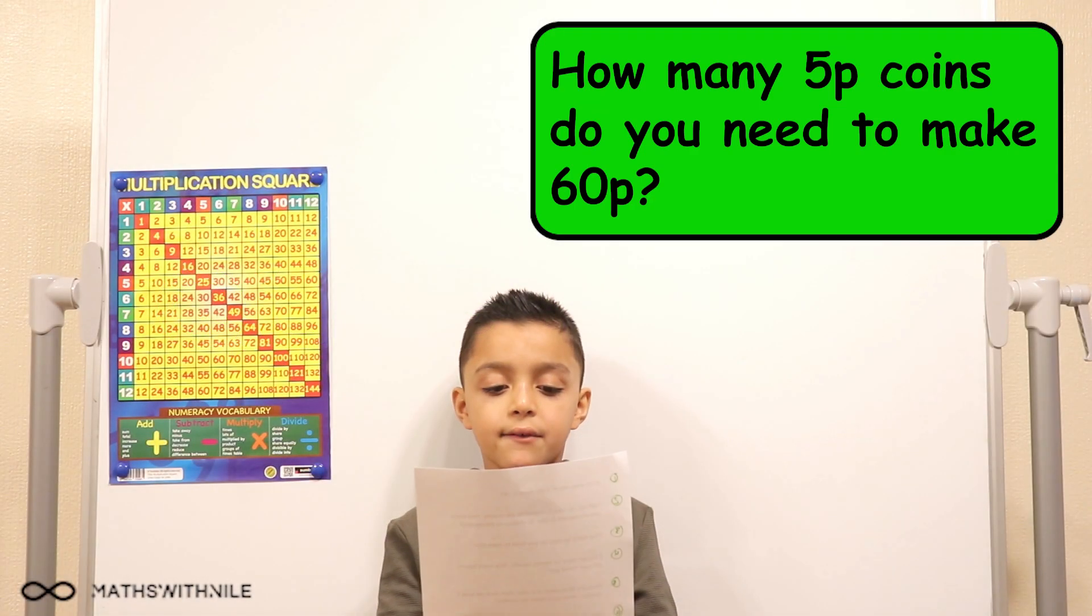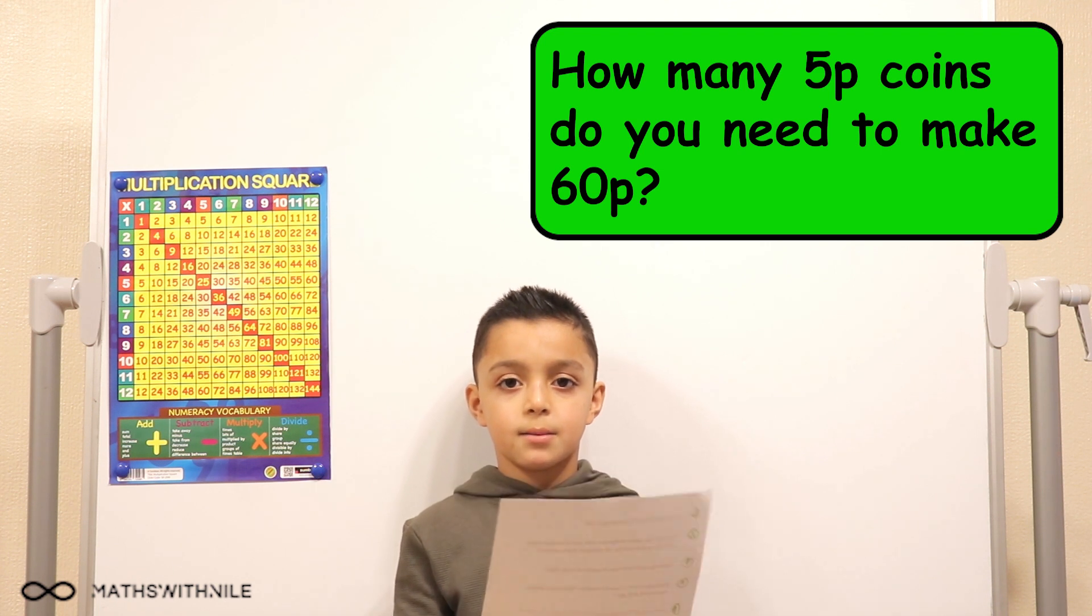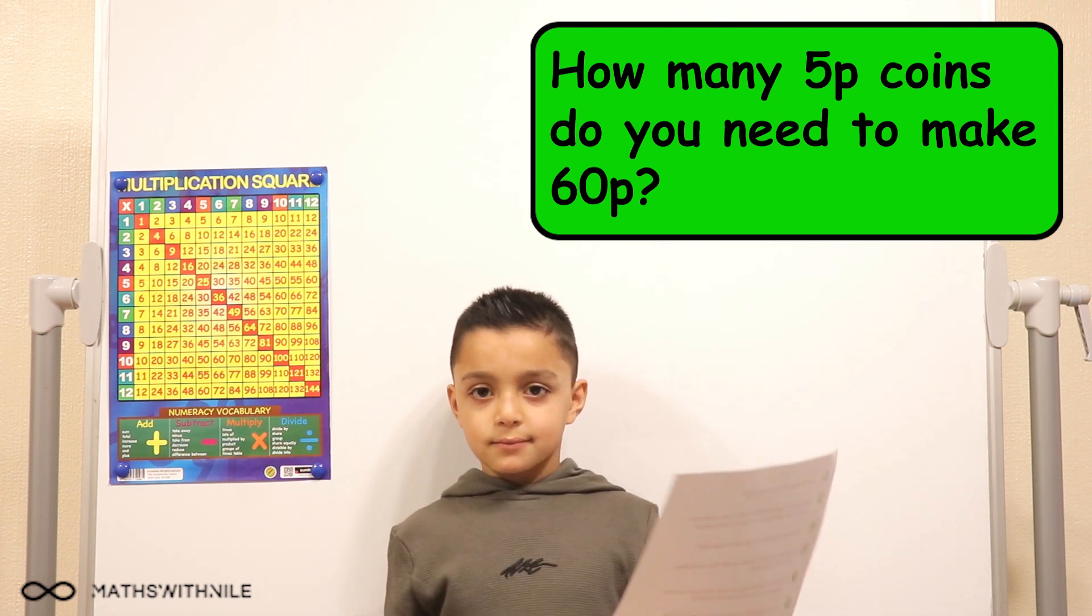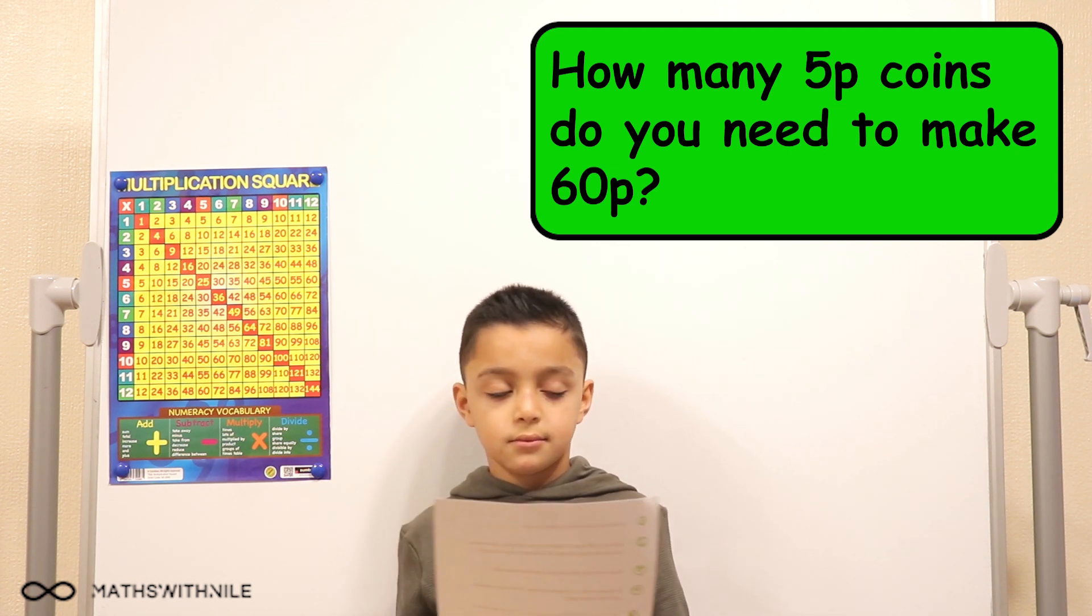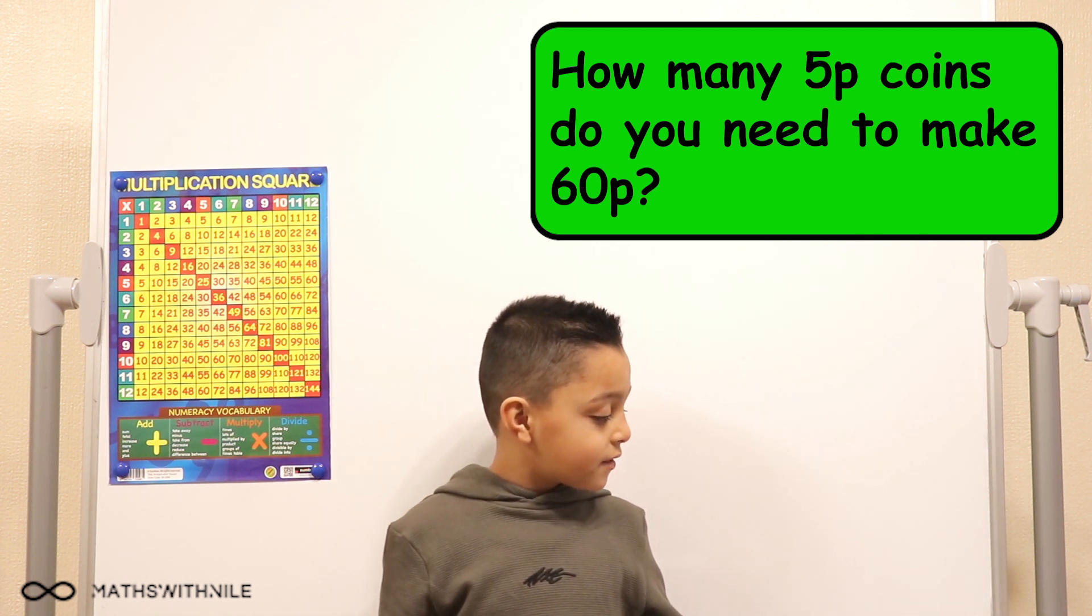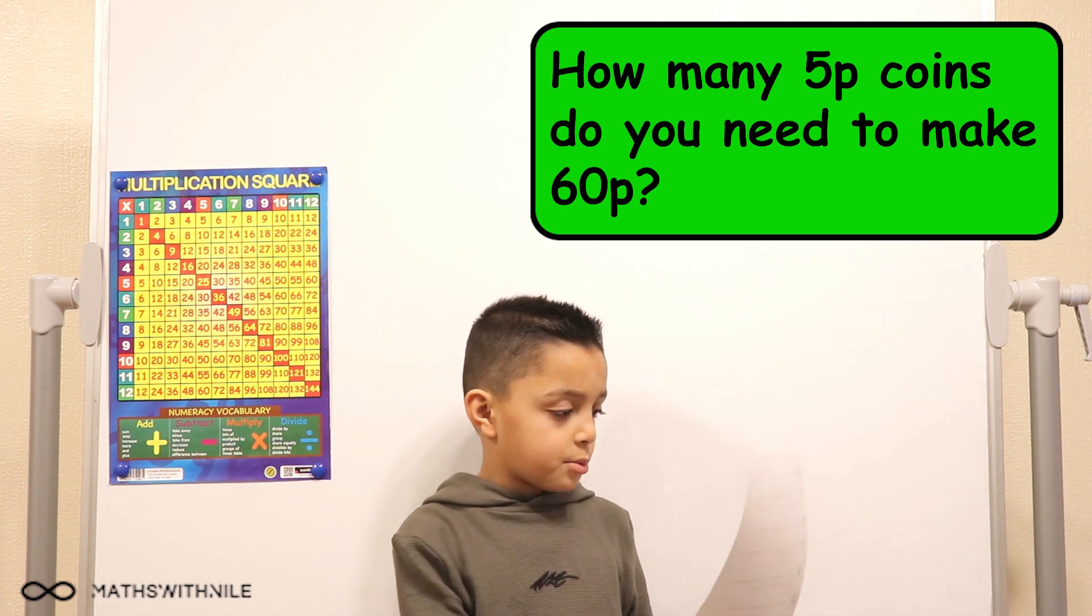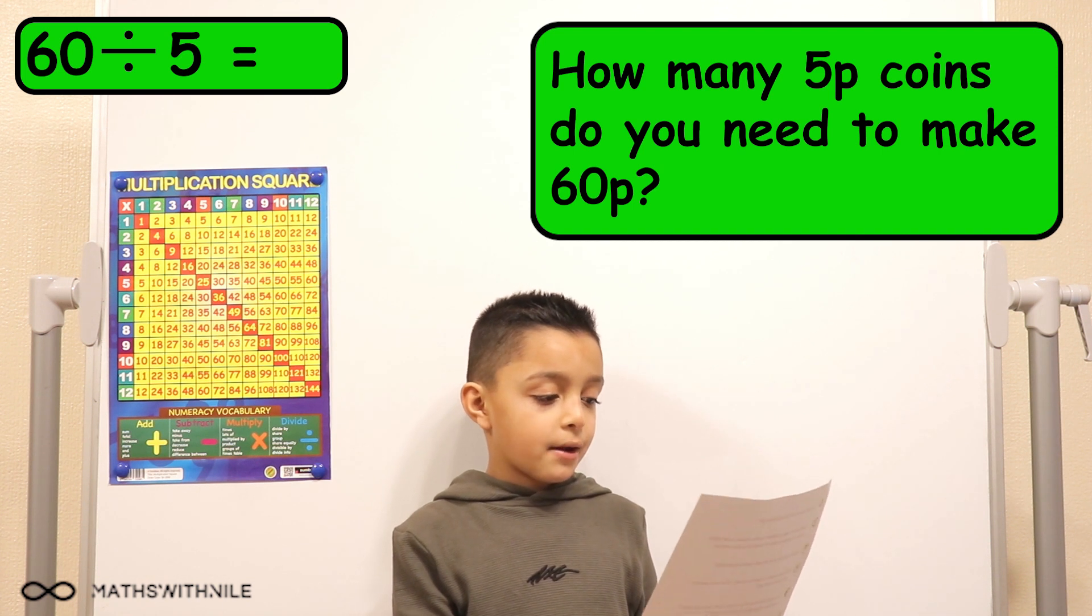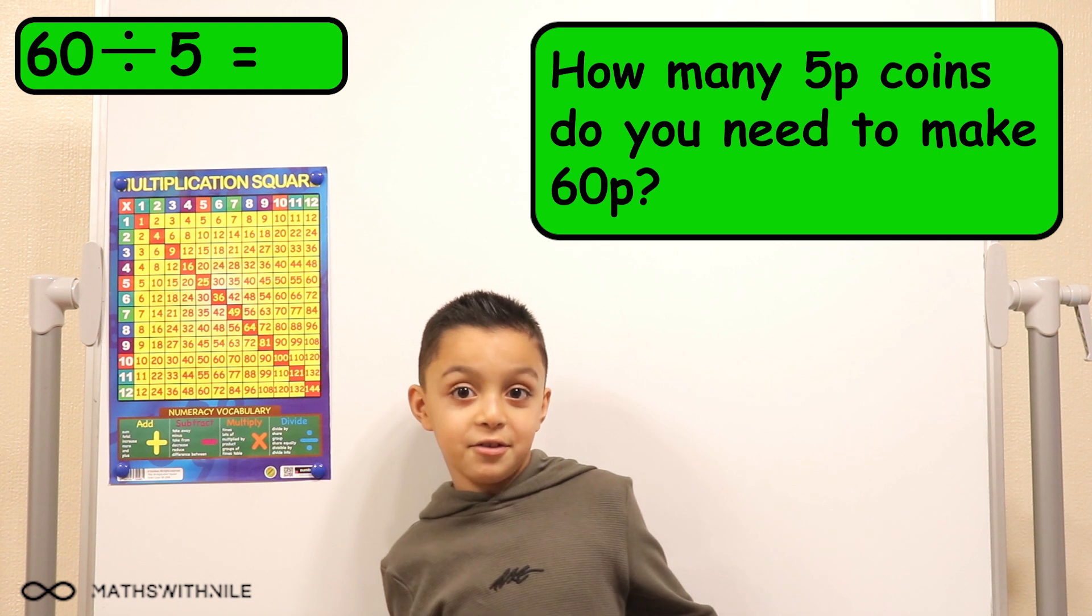How many 5p coins do you need to make 60p? Okay, so before you start explaining what you're going to do, what is the number sentence? The number sentence is 60 divided by five equals... Okay, so you're going to see. Yes, very good.